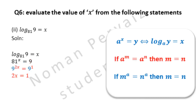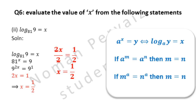We can apply the second property here because bases are same, so powers are equal. Hence, 2x is equal to 1. We need the value of x, so dividing both sides by 2: 2 is cancelled with 2, and x becomes equal to 1 over 2. Hence, this is our answer.